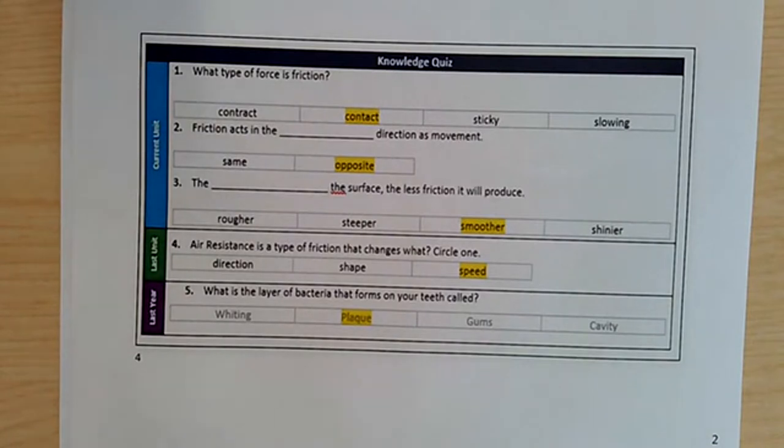Number four, air resistance is a type of friction that changes what? It changes the speed. And what is the layer of bacteria that forms on your teeth called? It's called plaque.